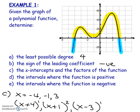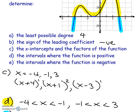For positive regions: the y value is 0 at negative 4 and at negative 1, so those endpoints are not included. It's positive from negative 4 to negative 1, and also from negative 1 to positive 3, not including the endpoints. The negative regions are from negative infinity to negative 4, not including negative 4, and from positive 3 to positive infinity, not including 3.